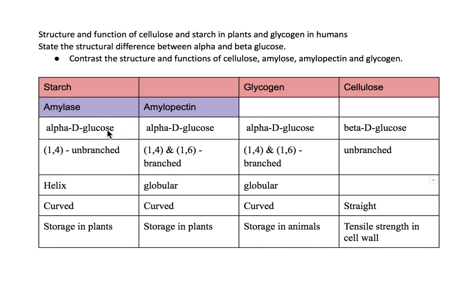They both are made of alpha-D-glucose. There are two types of glucose: alpha-D-glucose and beta-D-glucose. Amylose is 1,4 and amylopectin is 1,4 and 1,6 — this stands for the number of the carbon in the chain. You don't need to know exactly what they mean; you just need to know that amylopectin has more than one type of bonding.